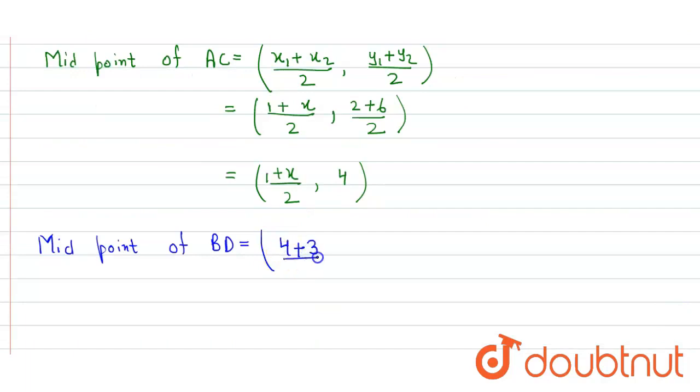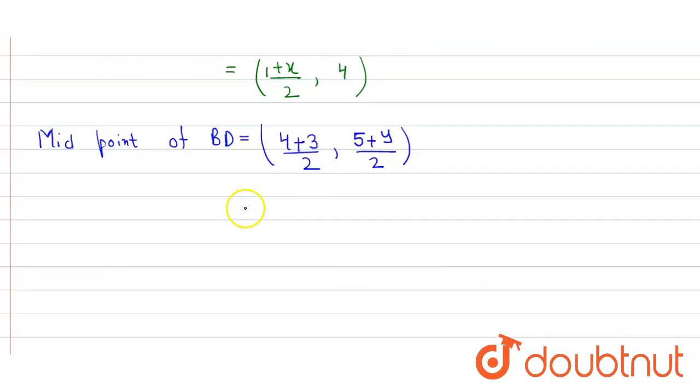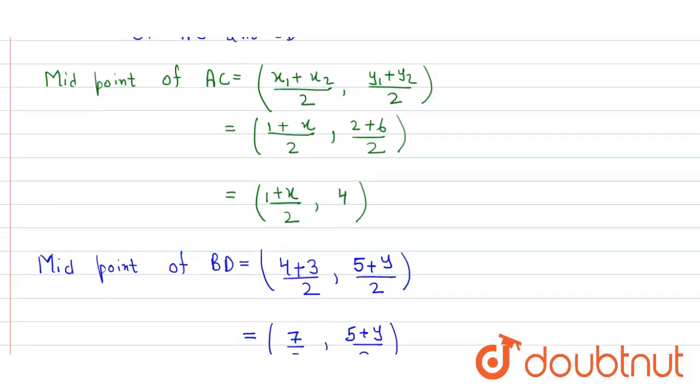4 plus 3 divided by 2, and for the y coordinate we get 5 plus y by 2. So here we get 7 divided by 2 and 5 plus y by 2.